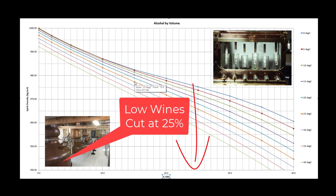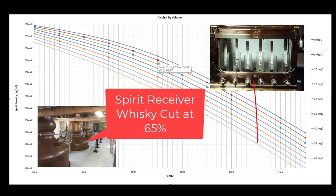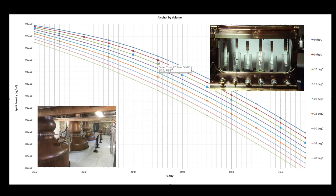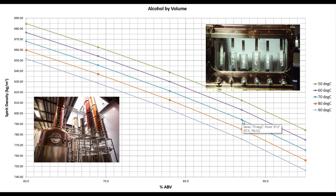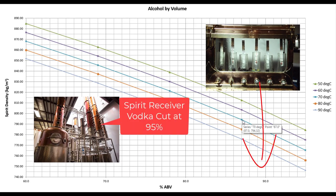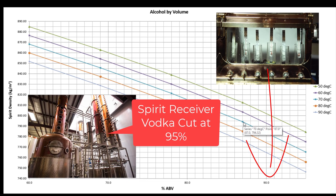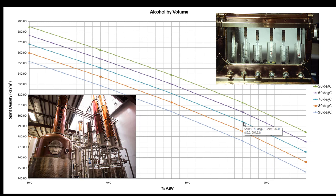For the wash still curve, we need to go down as low as 2 percent but the cut for low wines is at 25 percent, with a slight deviation at the bottom end. For the intermediate still — for pot stills — we cut at 65 percent, starting as low as 25 percent. The last curve is for a column still, running at a much higher temperature of 90 degrees Celsius: for vodka we cut at 90 percent ABV, and if using a column still for whiskey or gin we cut around 65 percent ABV.